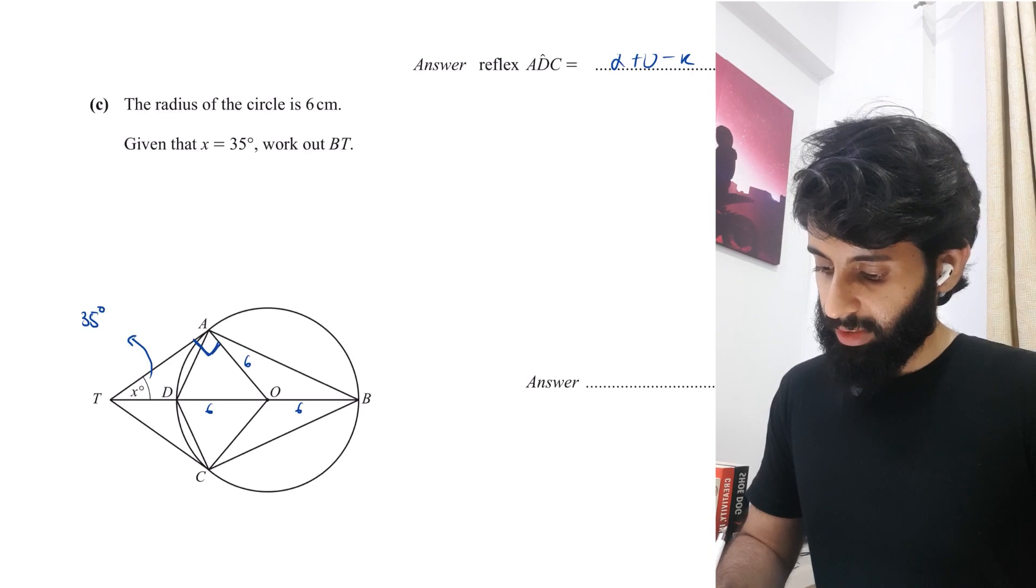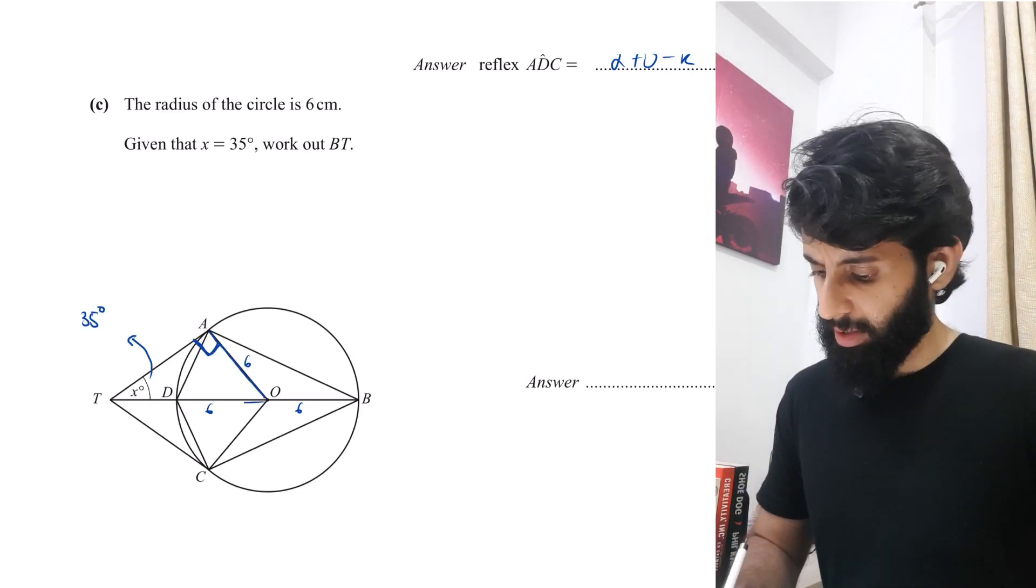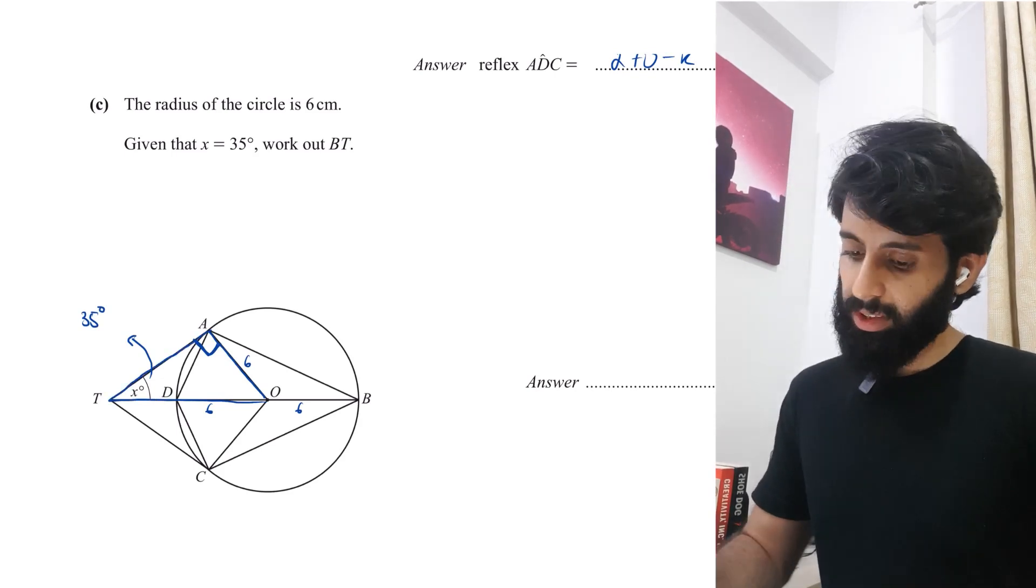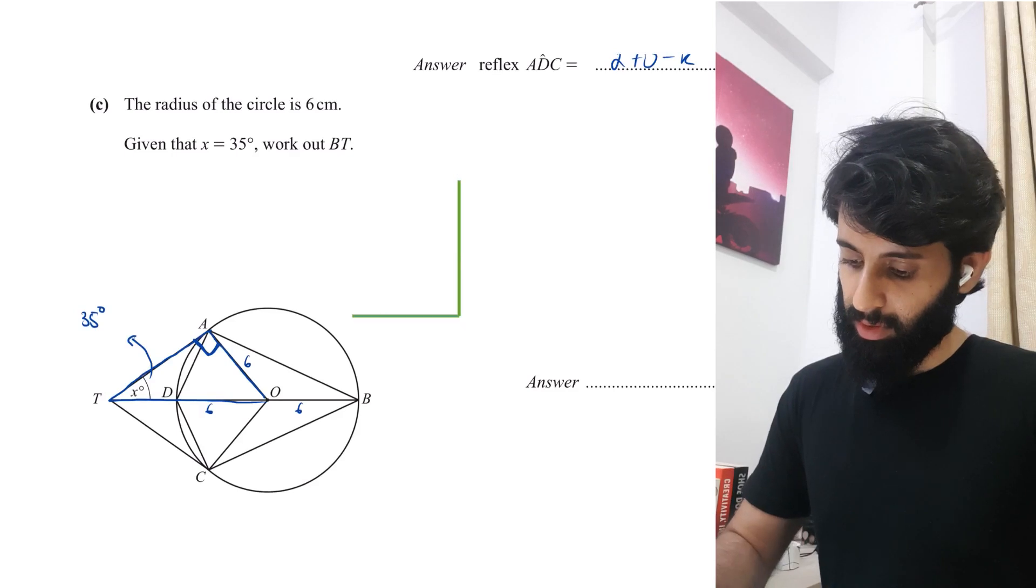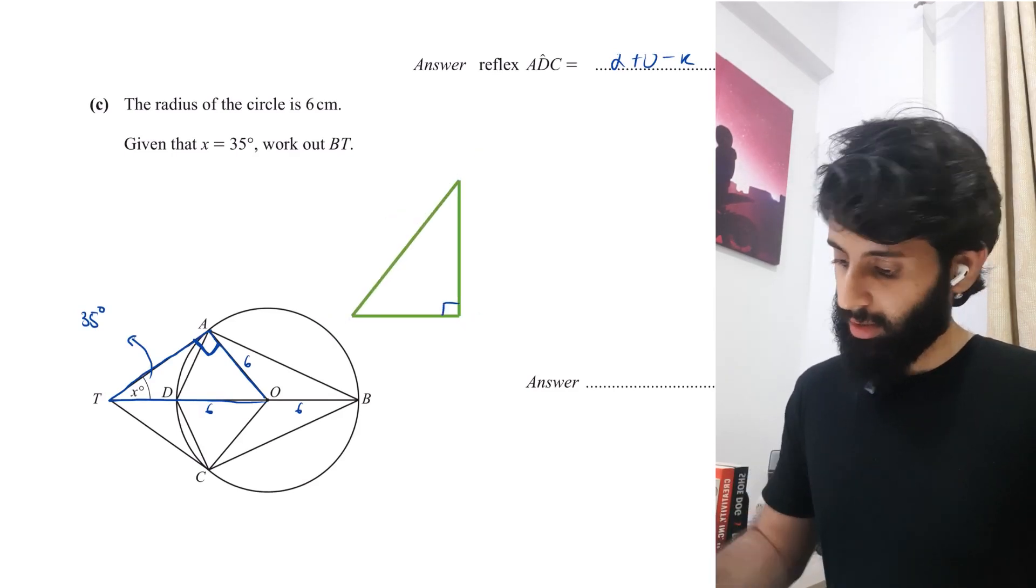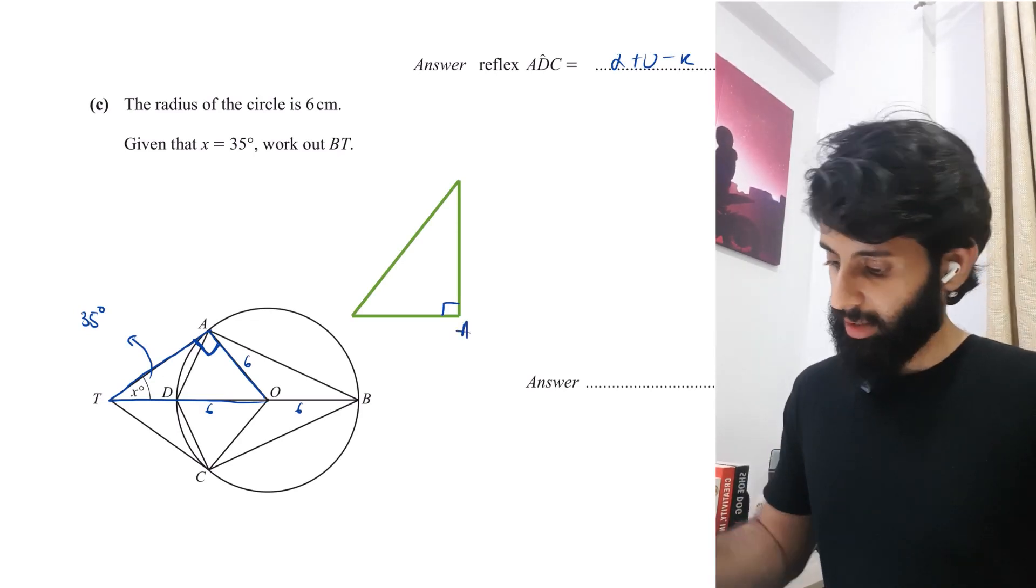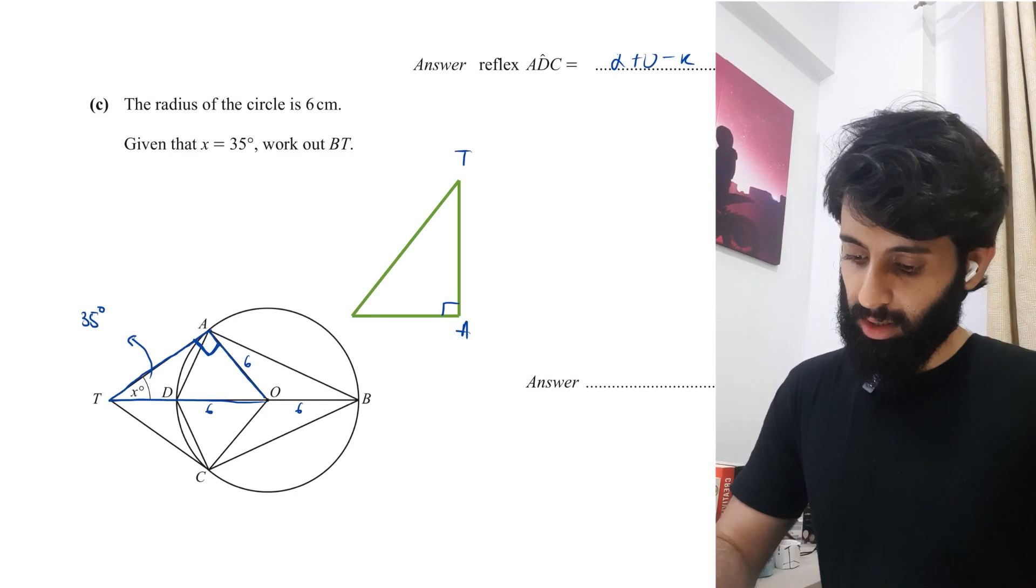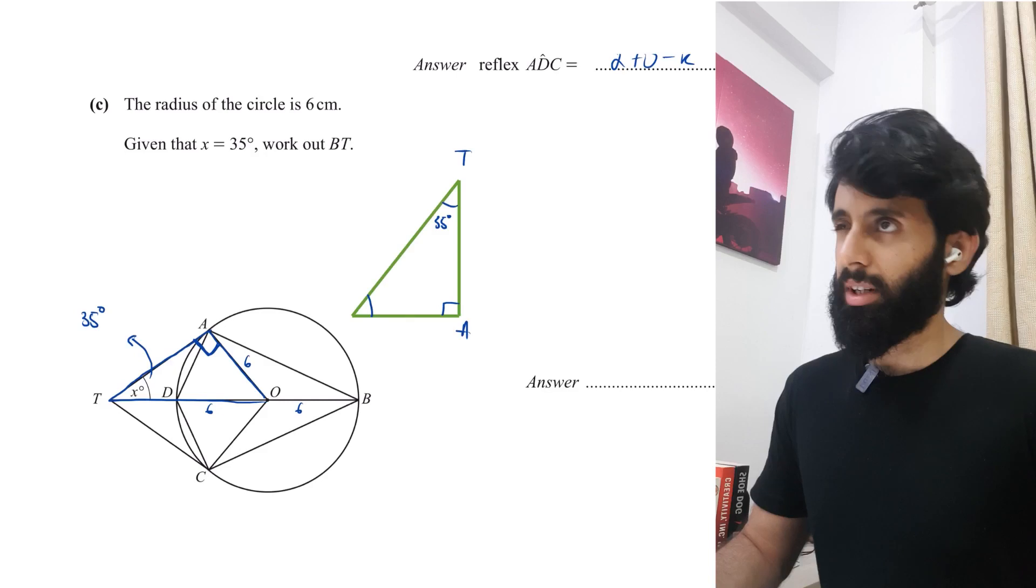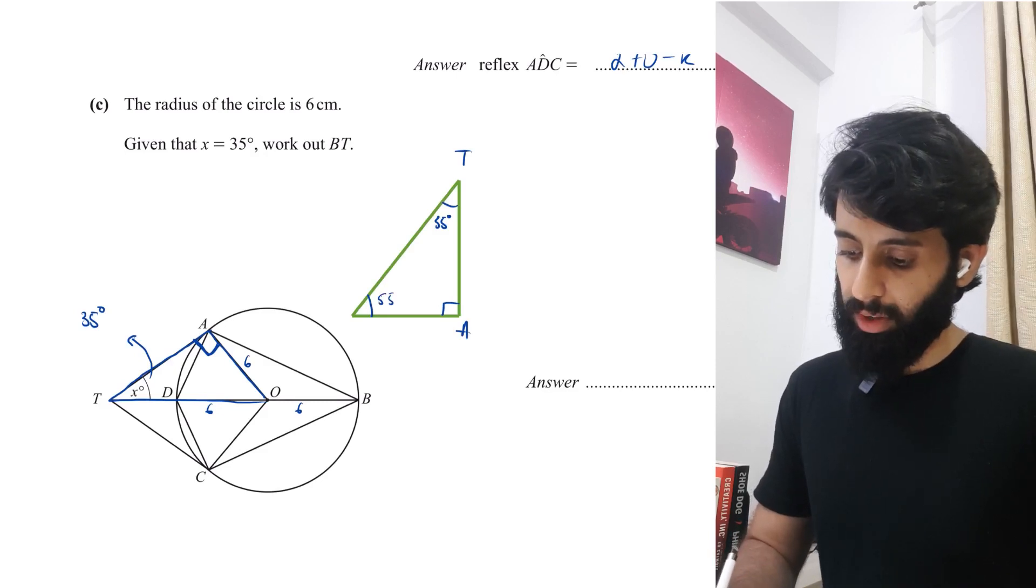Here's how this works. This angle we know is a 90 degree angle. There's a 90 degree triangle. Let's consider this triangle. If I draw it nicely over here, this angle is going to be 90 degrees. The 90 degree angle is at A. Here's T, which is 35 according to the question, which means that this angle is going to be 55 degrees.